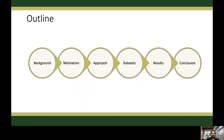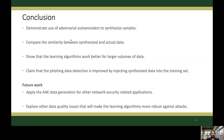Now let's discuss the conclusion of our work. We demonstrate how adversarial autoencoders can be used for synthesizing samples that mimic real phishing samples. We compare the similarity of features and instances of the synthesized data to ensure they can be realistically generated by an attacker. Our experiments reveal that phishing classifiers work better when trained with large volumes of data. We claim that phishing data detection is improved by injecting synthesized data into the training set. In future work, we will apply the adversarial autoencoder data generation to other network security related applications and explore data quality issues that will make learning algorithms more robust against these kinds of attacks.